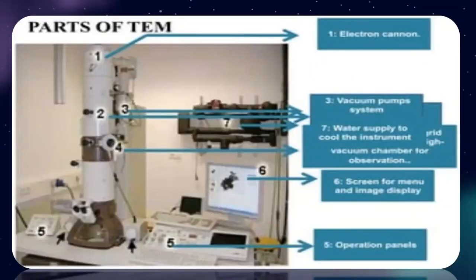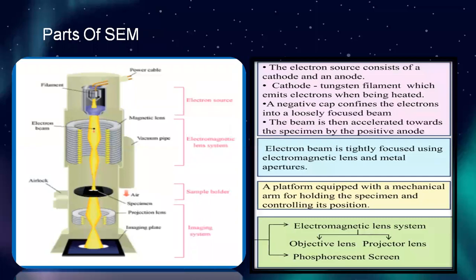Parts of the transmission electron microscope: first, electron cannon; second, vacuum pump system; third, water supply to cool the instrument; fourth, vacuum chamber for observation; fifth, screen for menu and image display; and sixth, lossless operation panels. The electron source consists of a cathode and anode. The cathode — a transition filament — emits electrons when heated; a negative cap confines electrons into a loosely focused beam. The beam is then accelerated towards the specimen by the positive anode. The electron beam is tightly focused using electromagnetic lenses and metal apertures. A platform equipped with a mechanical arm holds the specimen and controls its position. The system also includes an electromagnetic lens system, objective lens, projector lens, and a viewing screen. You can see the diagram.